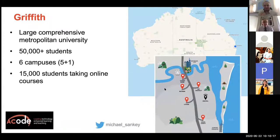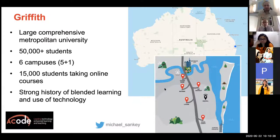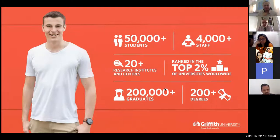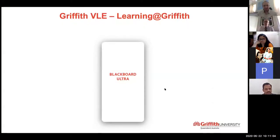We have about 15,000 students at any one time taking online courses — usually enrolled as on-campus students but also taking online courses — so we have a very strong history of blended learning. We have about 4,000-plus staff, 20 research centres and institutes, and are ranked in the top two percent of universities in the world. We have 200,000-plus graduates and 200-plus degrees on offer, from Bachelor of Business and Bachelor of Arts through to Bachelor of Laws.